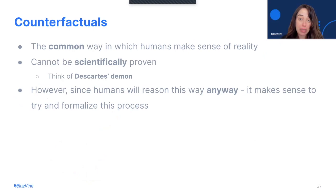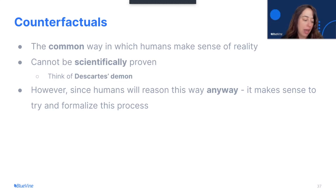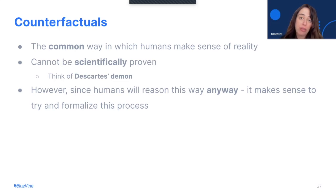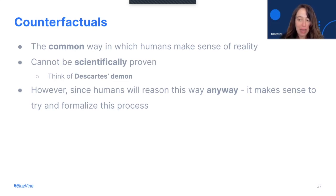Counterfactuals are the common way in which humans make sense of reality. It cannot be scientifically proven. Think of Descartes' demon — a thought exercise in which Descartes describes two events: event A that causes event B, but it basically says that you can never prove that there is some evil demon that causes event B to happen right after event A. So you can't prove causality in principle, but humans will reason this way anyway. So it makes sense to try and formalize this process.